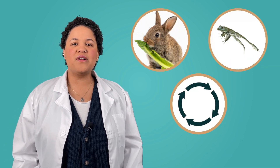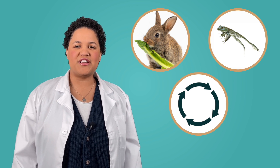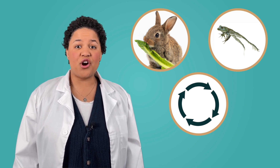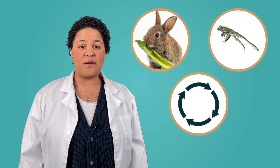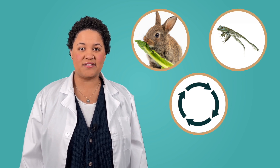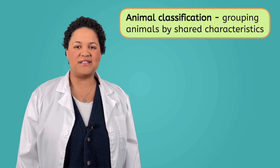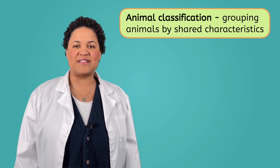We have already learned that all animals, including humans, share some important characteristics. They move, they eat food, and they go through a life cycle of birth, growth, reproduction, and death. But did you know that we group animals into categories based on certain characteristics? When we put animals into categories, it is called animal classification.